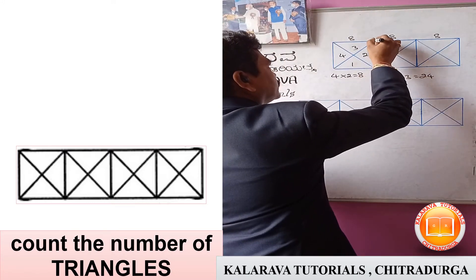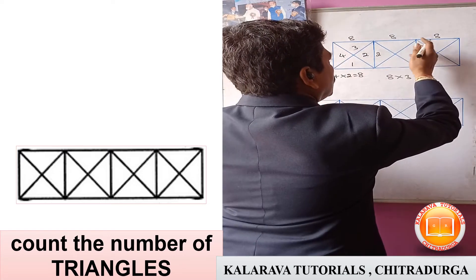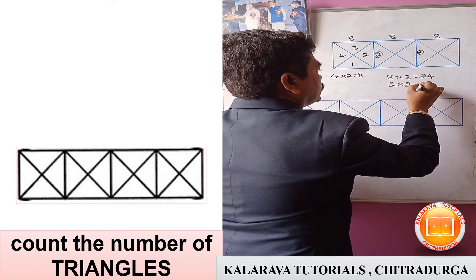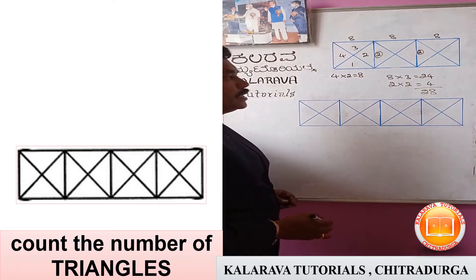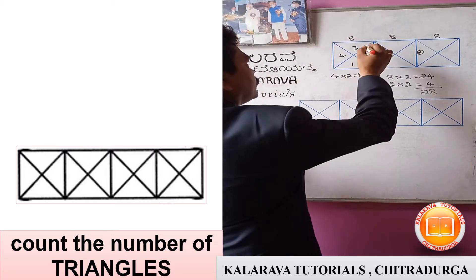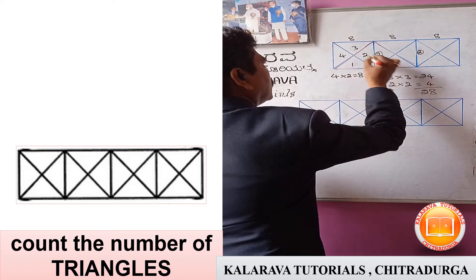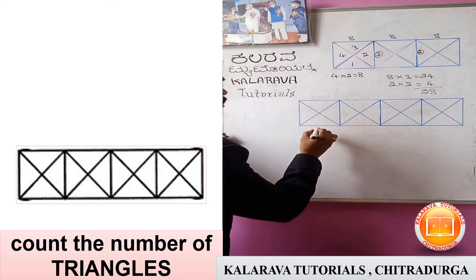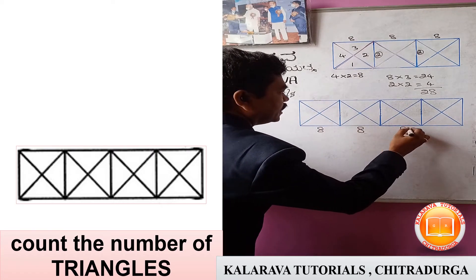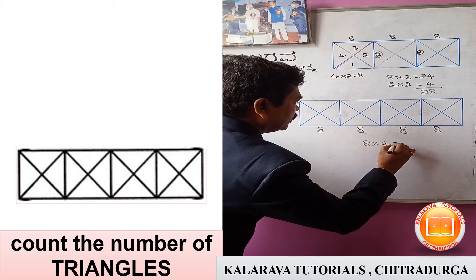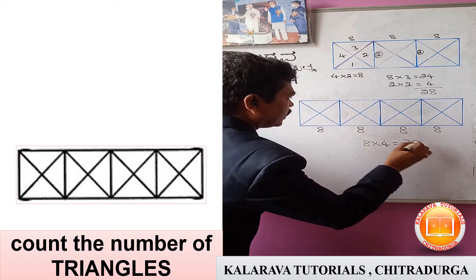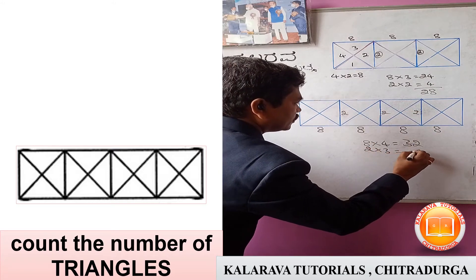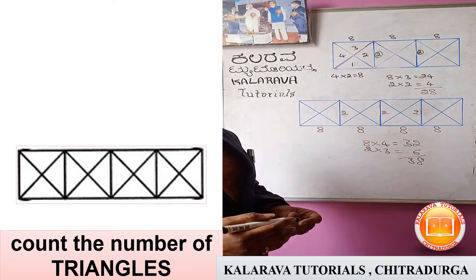Now there are common sides. This one is common side for these two, and this is the common side for these two. We have to consider 2 more triangles: 2 into 2 equals 4. Totally 28 triangles. For common side, we consider this triangle and also this one — these two are triangles for the common side. 8 into 4 is 32 triangles. Here 2, 2, 2 — so 2 into 3 equals 6. Totally 38 triangles.